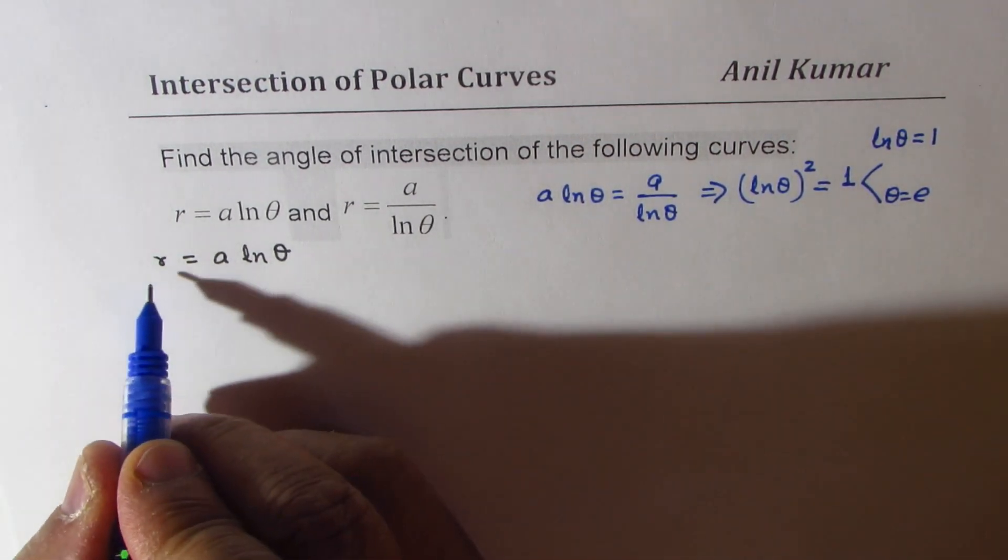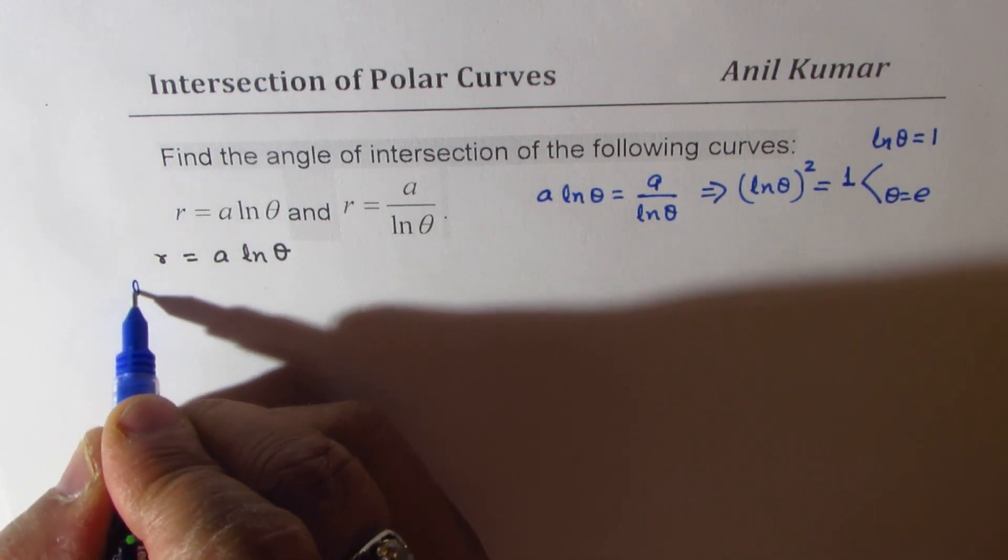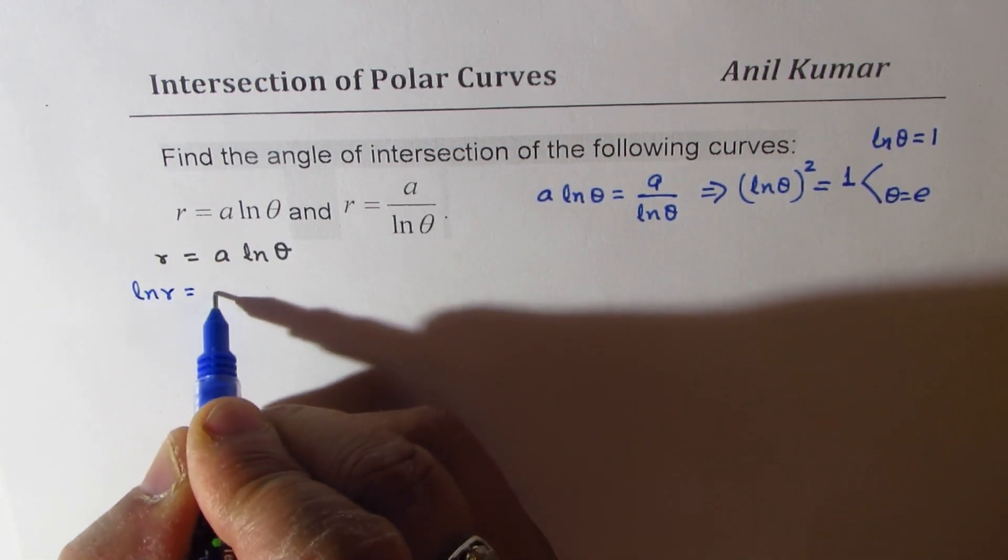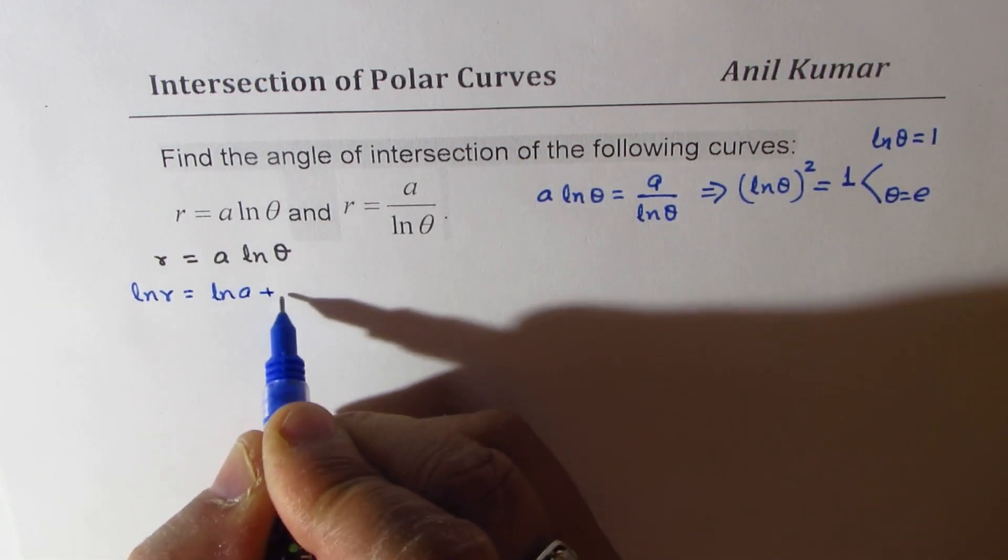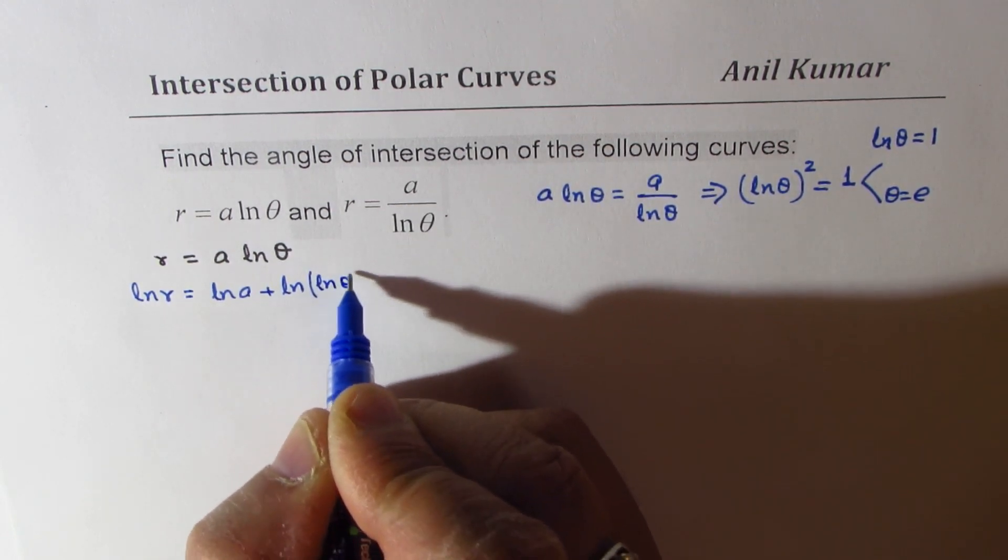Taking log on both sides, we get ln r equals to ln a plus ln of ln theta.